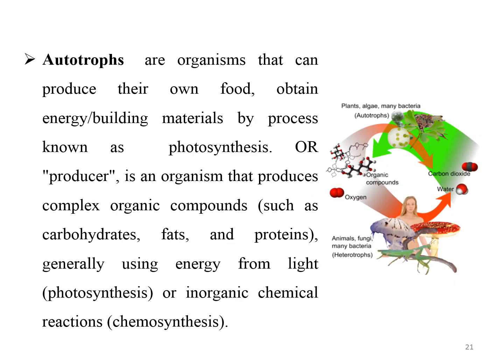Autotrophs are organisms that can produce their own food using materials from inorganic sources. They are the producers in the food chain, such as plants on land and algae in water. They produce complex organic compounds such as carbohydrates, fats, and proteins from simple substances in their surroundings, generally using energy from light through the process of photosynthesis or inorganic chemical reactions called chemosynthesis.